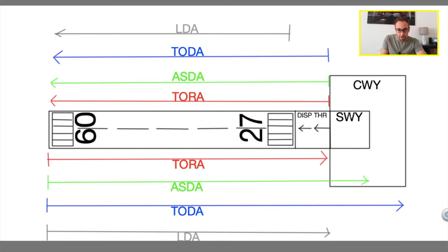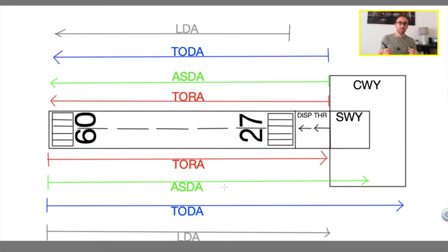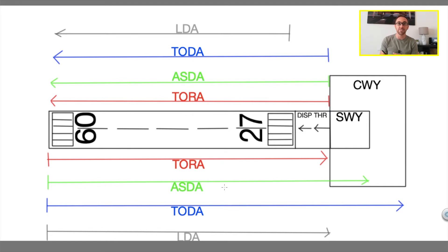Then we've got the stopway. The stopway is a portion of the runway that normally is asphalt and is used for emergency cases. Let's say you are taking off, then you reject the takeoff because you have some problems — the stopway is the portion of the runway that you can use to stop your aircraft after you have aborted the takeoff.